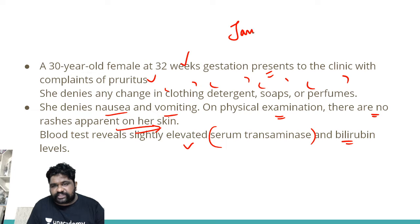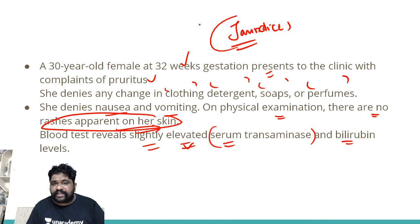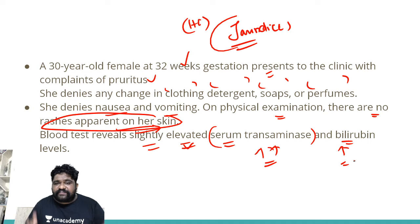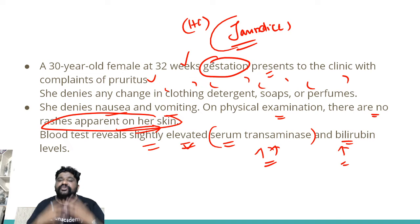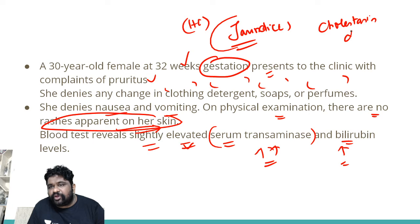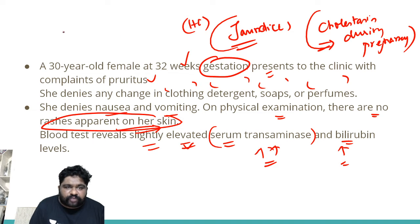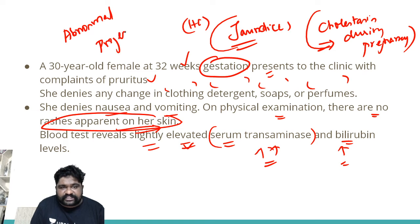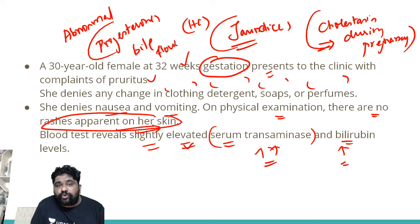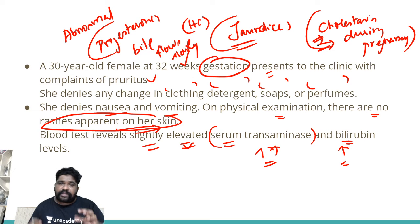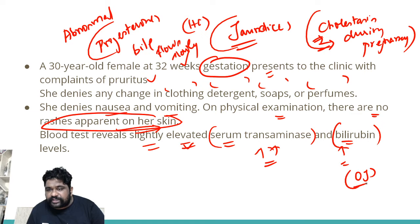The slightly elevated transaminases and bilirubin might suggest jaundice, but jaundice would present with rashes and significantly elevated transaminases and bilirubin — especially in hepatocellular jaundice. Since findings are only slightly elevated and there are no abnormal physical findings, and the patient is 32 weeks pregnant, this can be a case of cholestasis during pregnancy. Abnormal hormone release — estrogen excess and progesterone excess — slows the flow of bile, causing cholestasis without a structural blockade, equivalent to a mild obstructive jaundice.